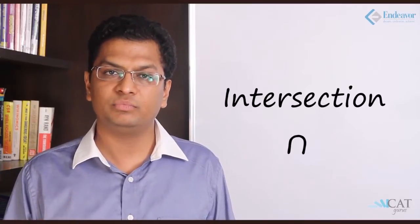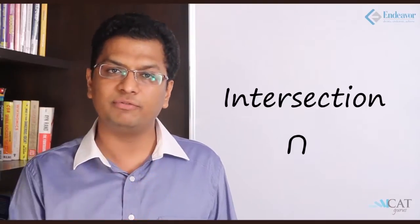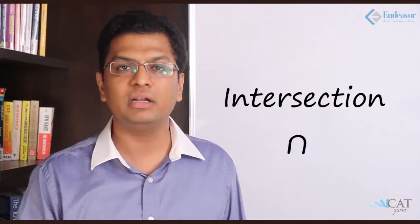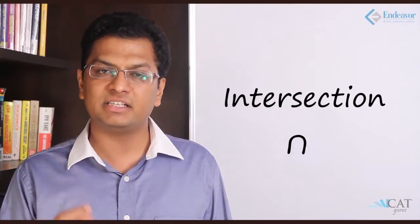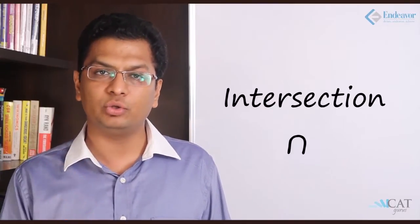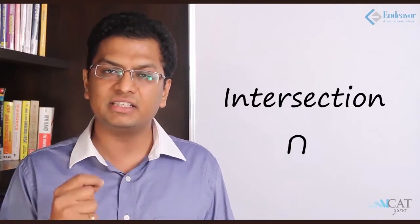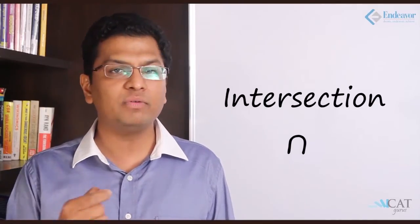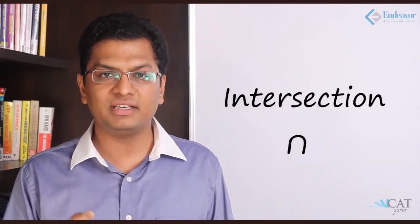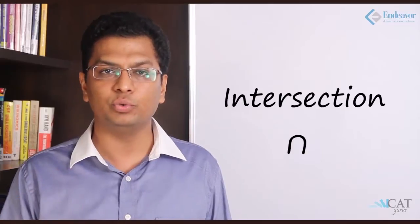Now let us look at intersection. Taking the same example: set 1 has 1, 2, 3, 4 and set 2 has 3, 4, 5, 6. Intersection means what is common between the two. So 3 and 4 are common, meaning the intersection gives two items: 3 and 4. Union is written as U, whereas intersection is written as an inverted U.